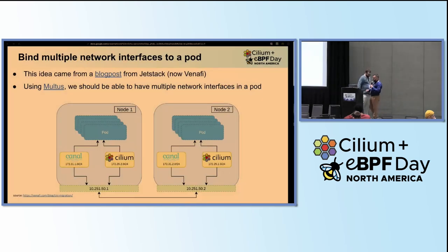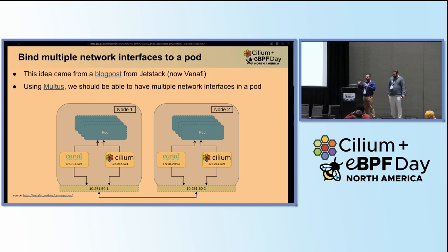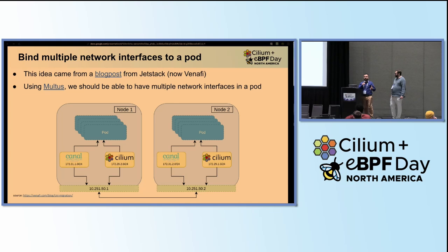As Ray mentioned, one of the other alternatives was to use Multus and bind multiple ports to a single pod. This idea actually came from a blog post from Jetstack, now Venafi — we've linked the blog post in the slides. Essentially, we'd be able to use Multus to bind multiple networking interfaces to a pod and have one networking interface served by Calico and the other one served by Cilium. In these diagrams they use Canal, but the theory kind of translates.